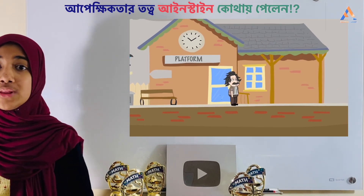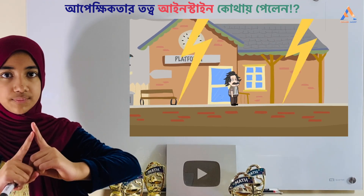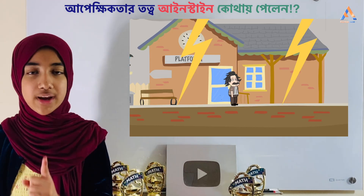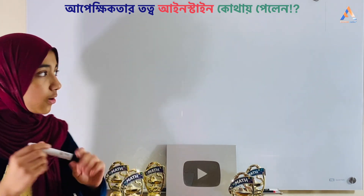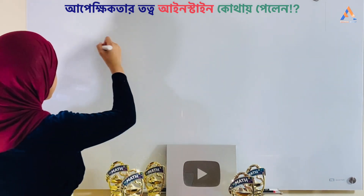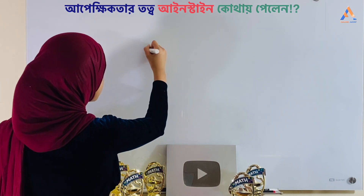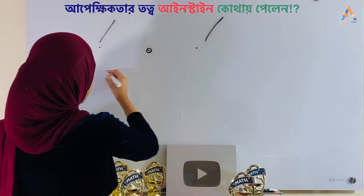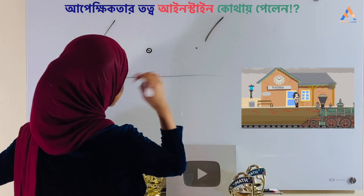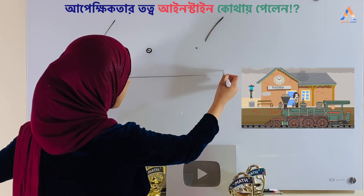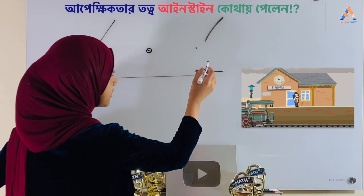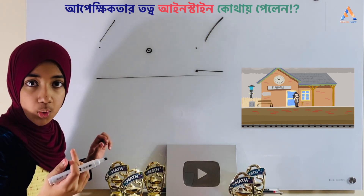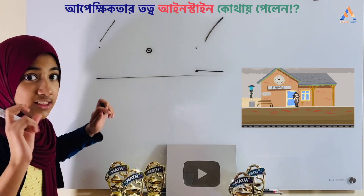He also came up with another thought experiment involving two lightning bolts, with him in the middle. Let's say this is his point, and these are the lightning bolts. Then a train was traveling through, and when the train came here, that lightning struck.